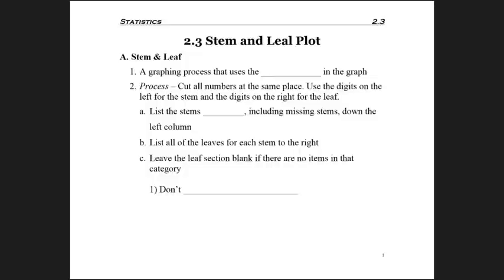Now we're going to look at a graph that's called a stem and leaf plot. This is a graphing process that uses the actual data in the graph. So the numbers that are being used to determine the graph are part of the graph.